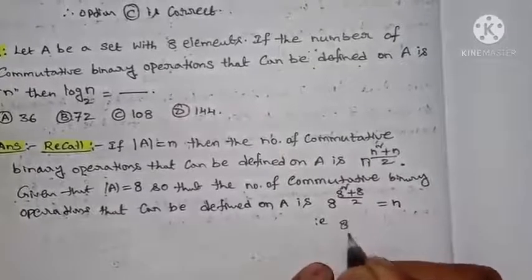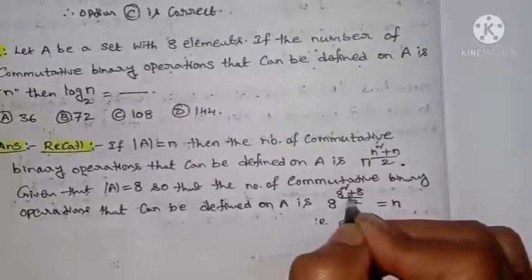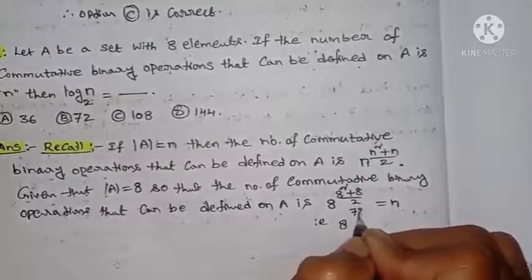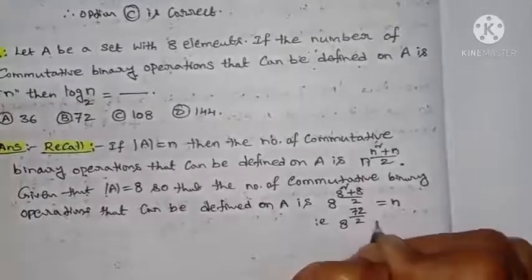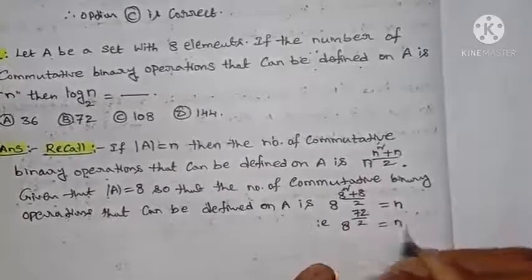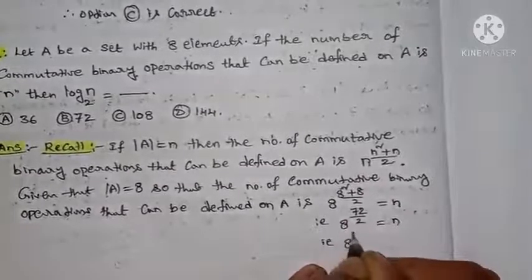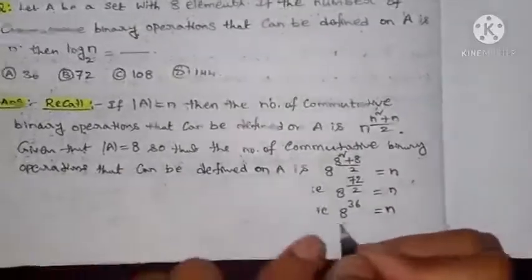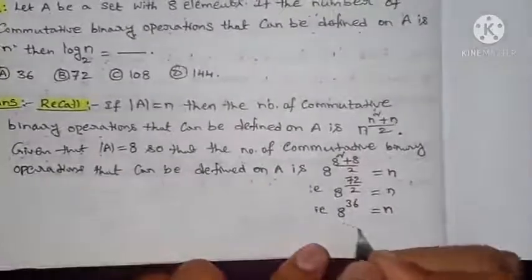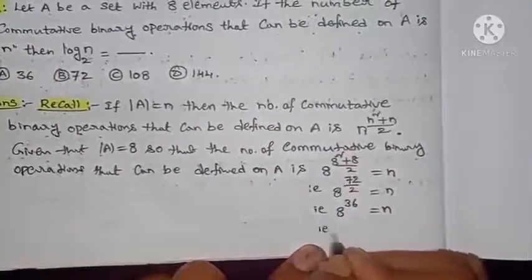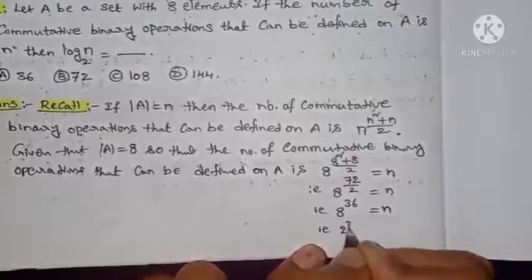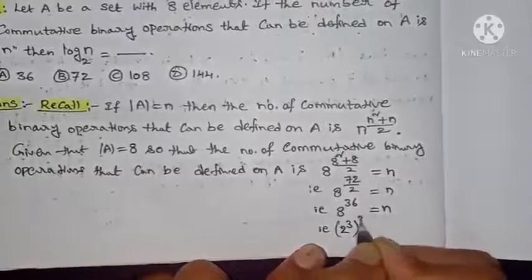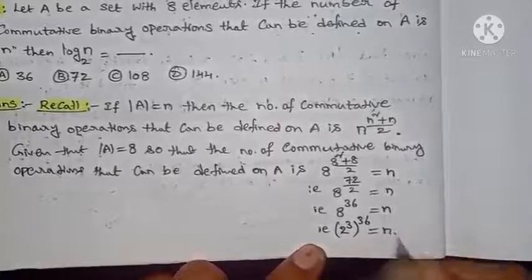Simplifying: 8 squared is 64, plus 8 is 72, divided by 2 is 36. So this becomes 8 to the power 36 equals N. Now 8 can be written as 2 cubed, so this is (2³)³⁶ equals N, which gives 2 to the power 108 equals N.